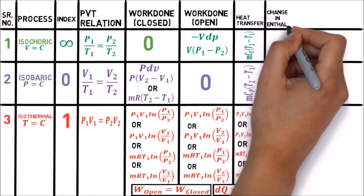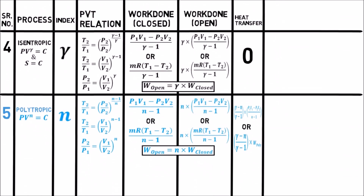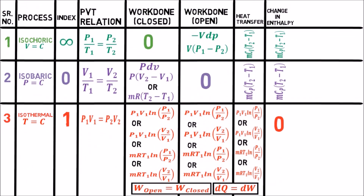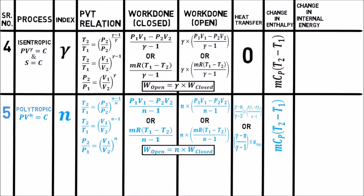Let's see another parameter: change in enthalpy dH. It is mCp(T2 − T1) for all the processes except isothermal, because in isothermal process change in enthalpy and change in internal energy are all zero. The same mCp(T2 − T1) applies for isentropic and polytropic processes also. For change in internal energy, from Joule's experiment we get mCv(T2 − T1) for all the processes except isothermal, where internal energy is zero as per the first law equation. Same mCv(T2 − T1) for isentropic and polytropic processes also.